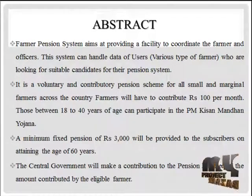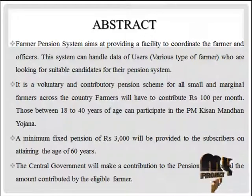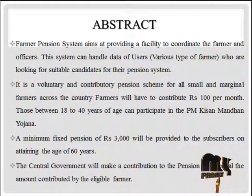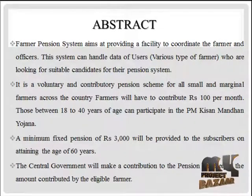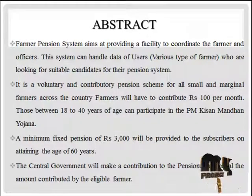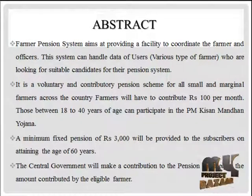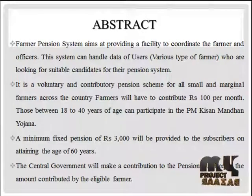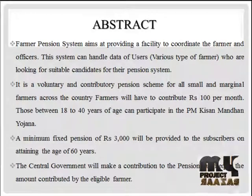Those between 18 to 40 years of age can participate in the PM Kisan Pension scheme. A minimum fixed pension of Rs. 3000 will be provided to subscribers on attaining the age of 60 years. The central government will make a contribution to the pension fund equal to the amount contributed by the eligible farmers.